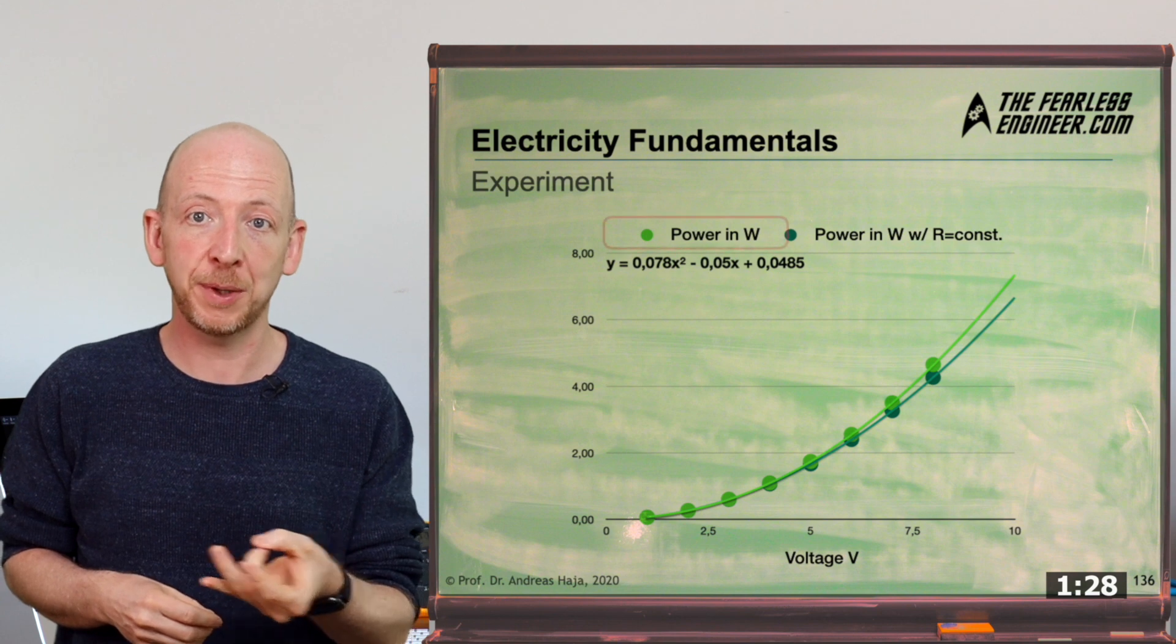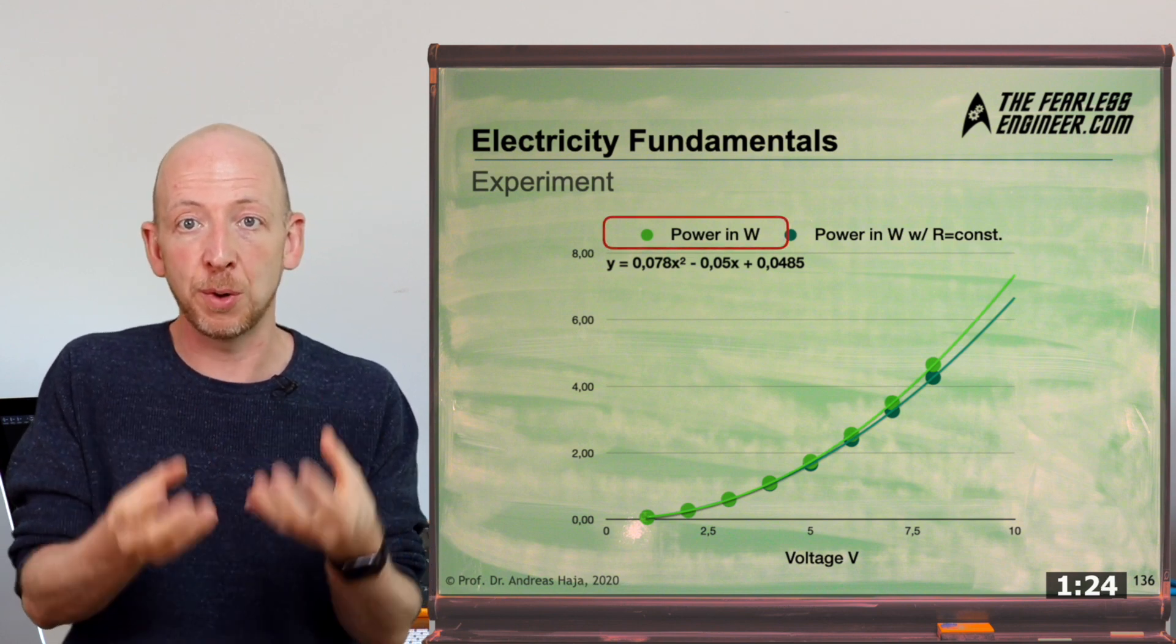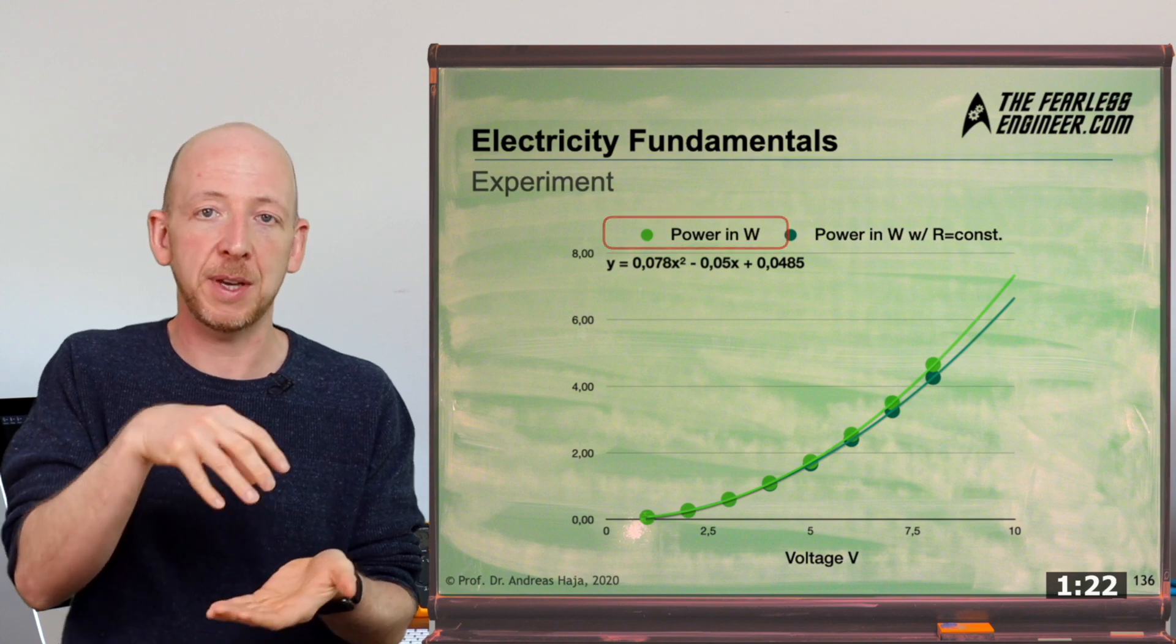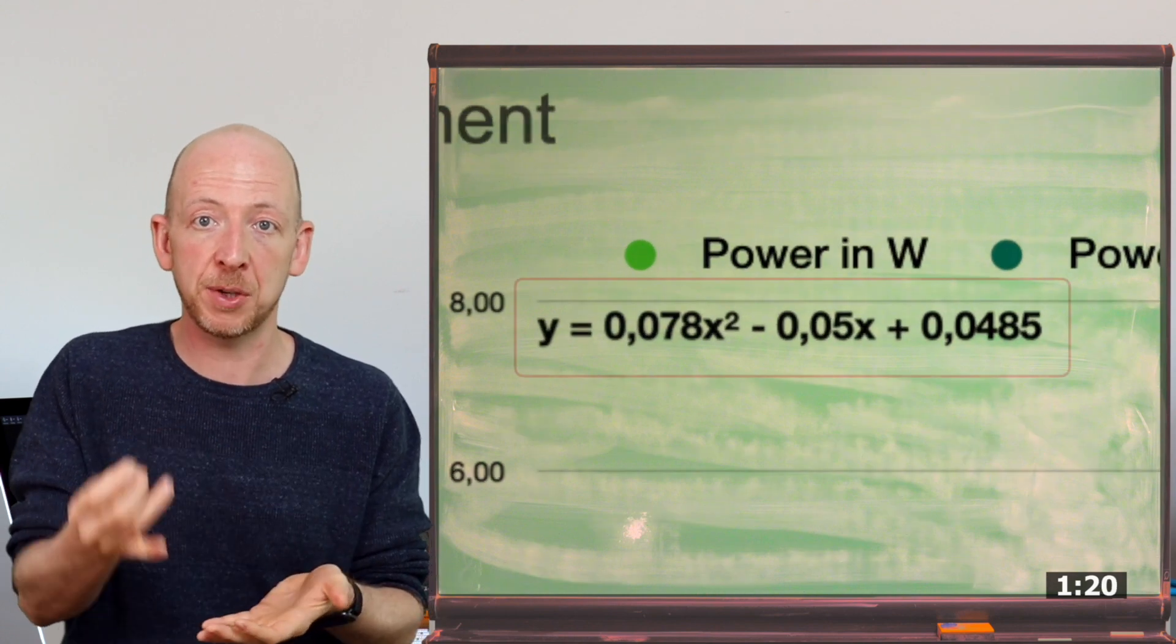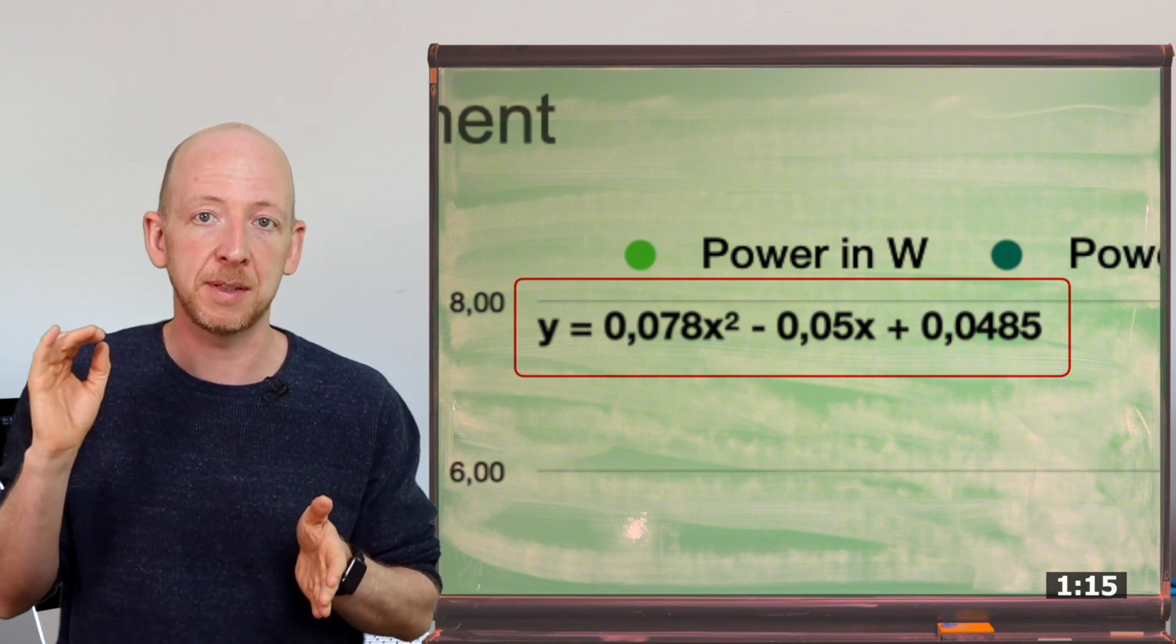If we now take a look at the power curve we can easily spot that the power converted into heat at the resistor grows in a nonlinear fashion. If we insert a regression function into the measured values and display the equation for it, then we can see that the growth is indeed quadratic.